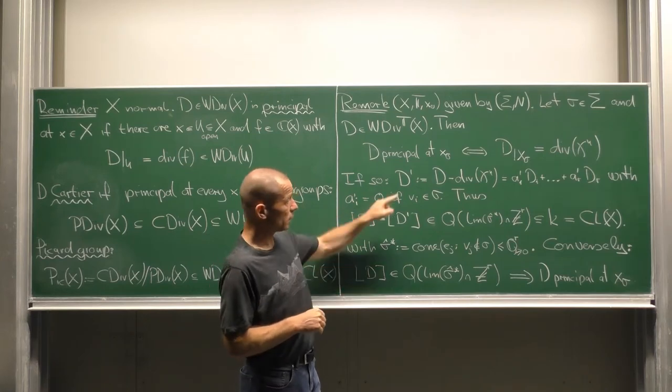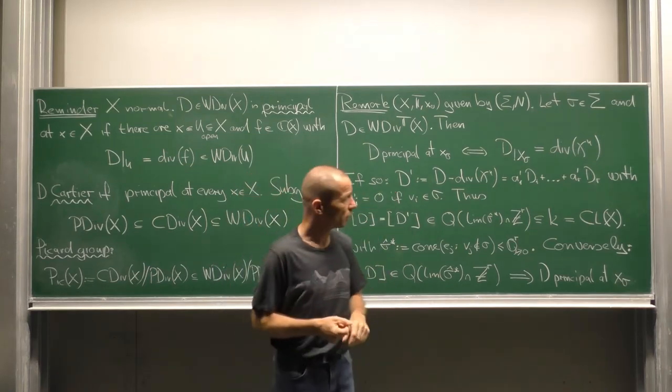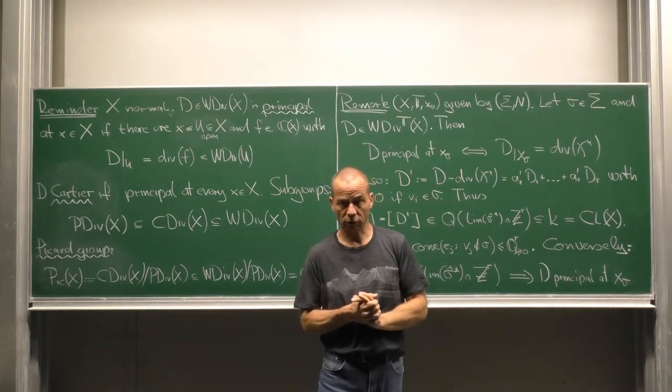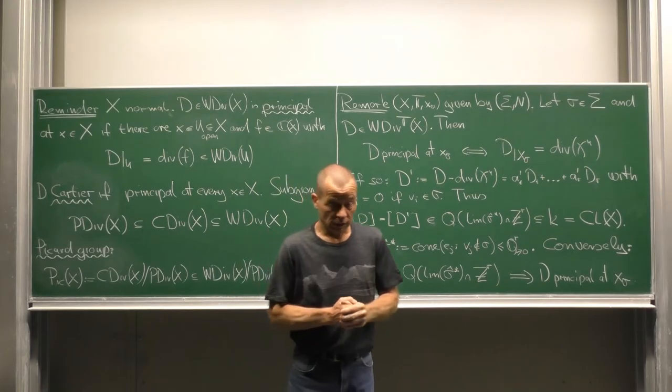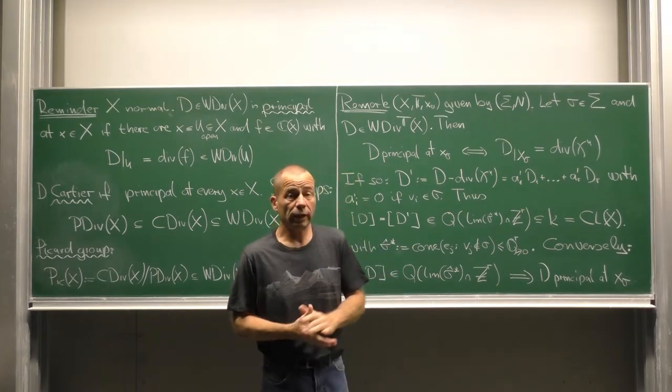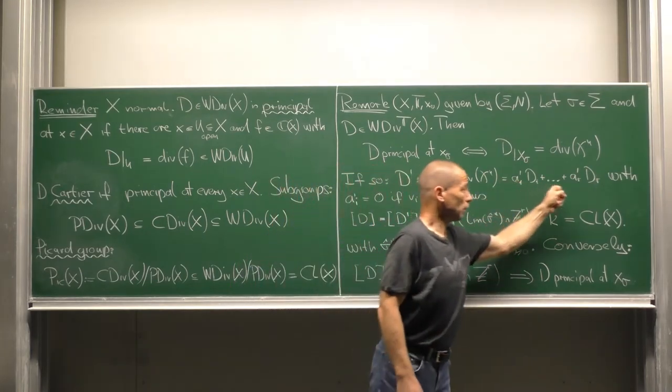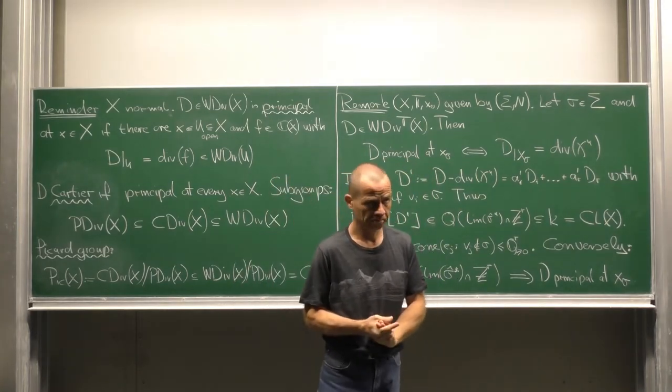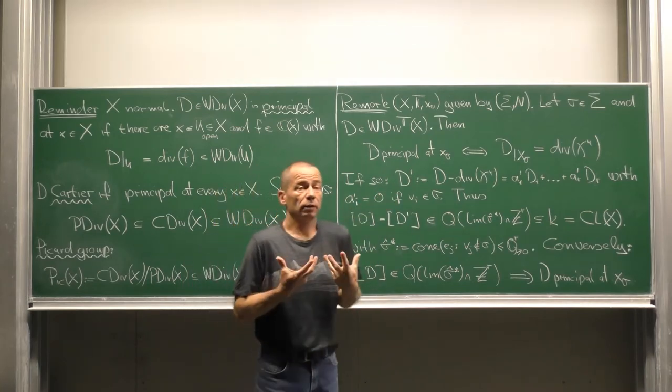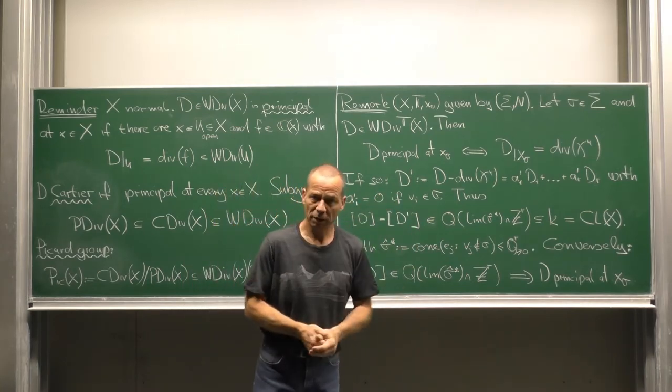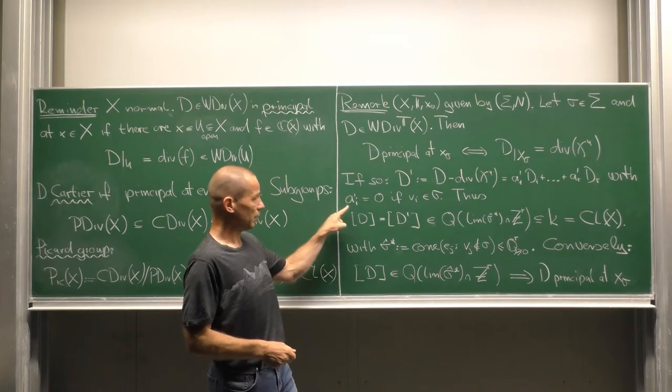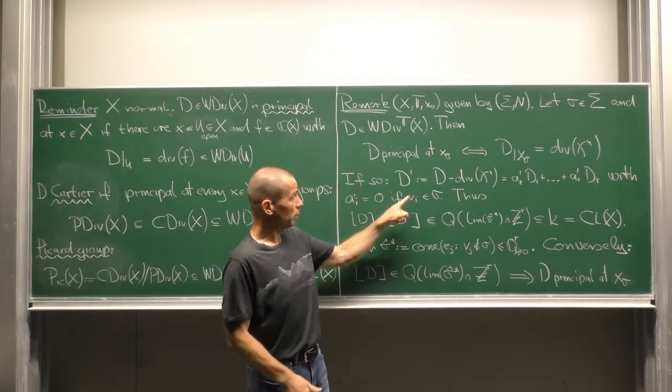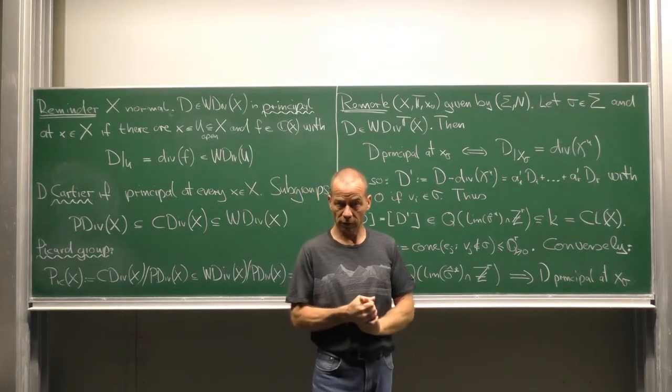In this case we look at the difference D' equal D minus the divisor of this character function. D' is again an invariant divisor so it is a linear combination of our invariant prime divisors with coefficients a i prime. The fact that D' is trivial on X sigma exactly means that we have a i prime equal 0 whenever the primitive generator v i belongs to the cone sigma.